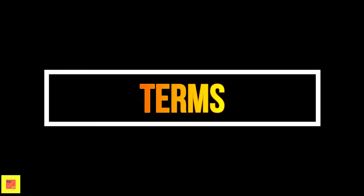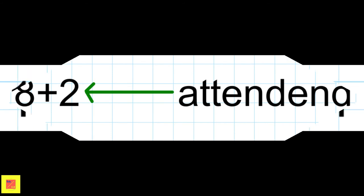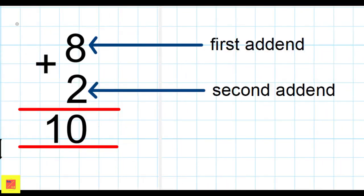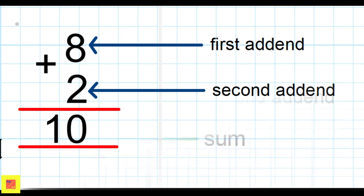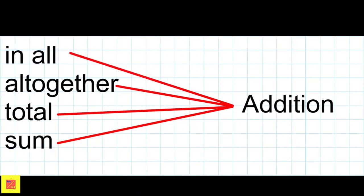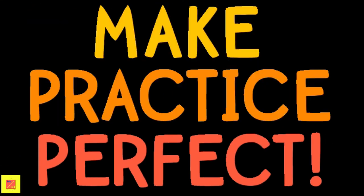Thus, the sum of eight long books and two short books is ten — there are ten books in all on the table. Do you know the terms used for the numbers in an addition? The numbers we add are called addends. The total we get after adding the numbers is called the sum. In the example we just solved, eight and two are addends, and ten is the sum. Remember, the words 'in all', 'altogether', 'total', and 'sum' imply addition.